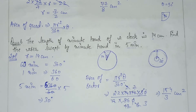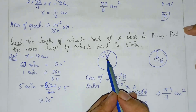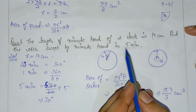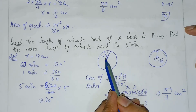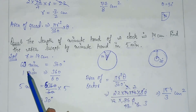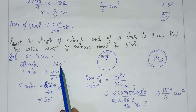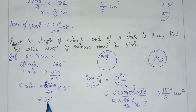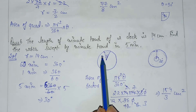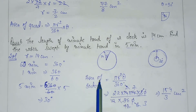So to find the area swept by the minute hand in 5 minutes, we first found that in 5 minutes the angle swept is 30°, then applied the sector area formula to get the answer.